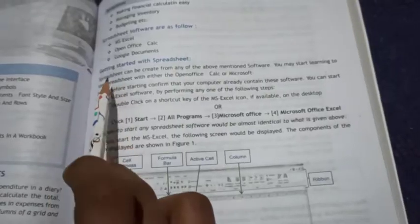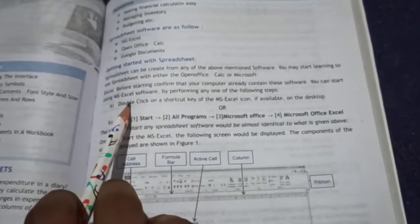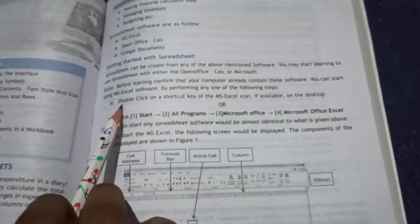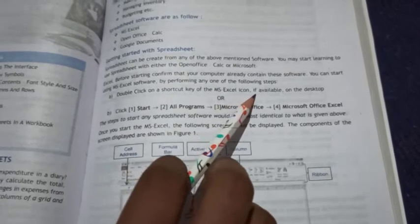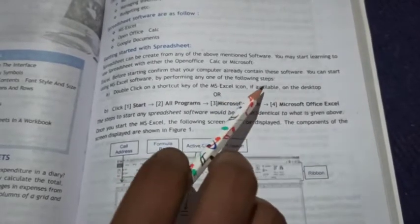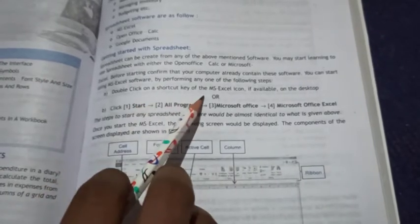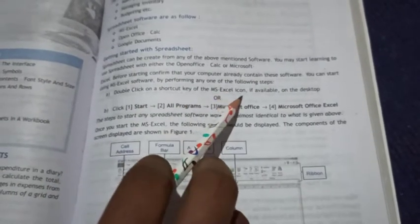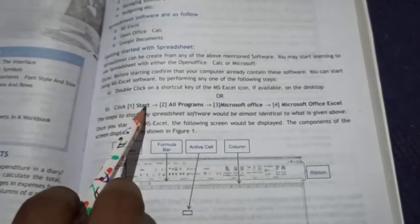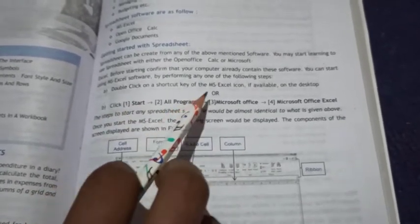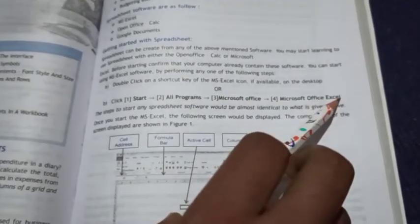Next topic is getting started with spreadsheet. Double click on the MS Excel icon if available on the desktop, or else click on Start menu, then All Programs, then Microsoft Office, then Microsoft Office Excel.